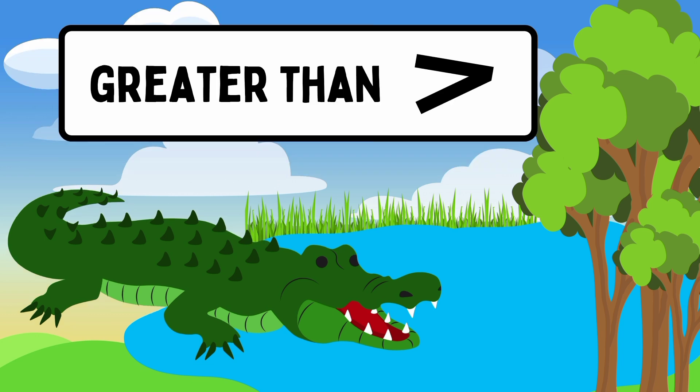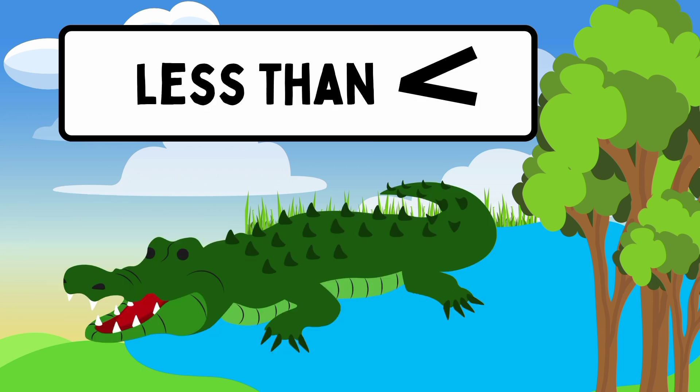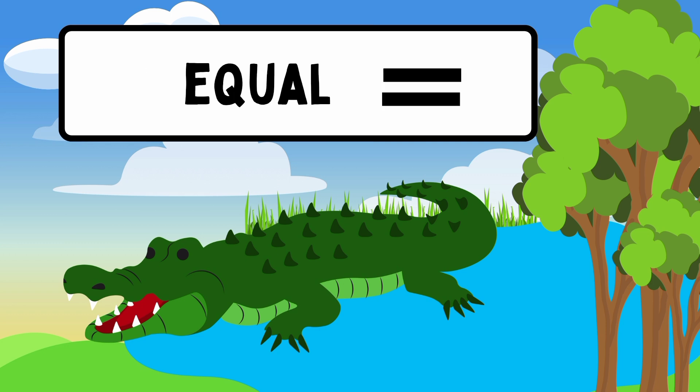This is the greater than symbol. It is like the mouth of the hungry alligator which is open. This is the less than symbol. It looks like the inverted L letter. This is the equal to symbol.